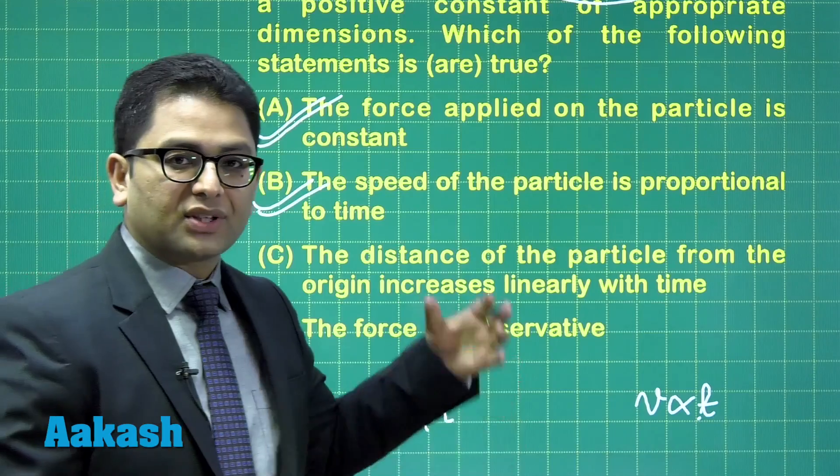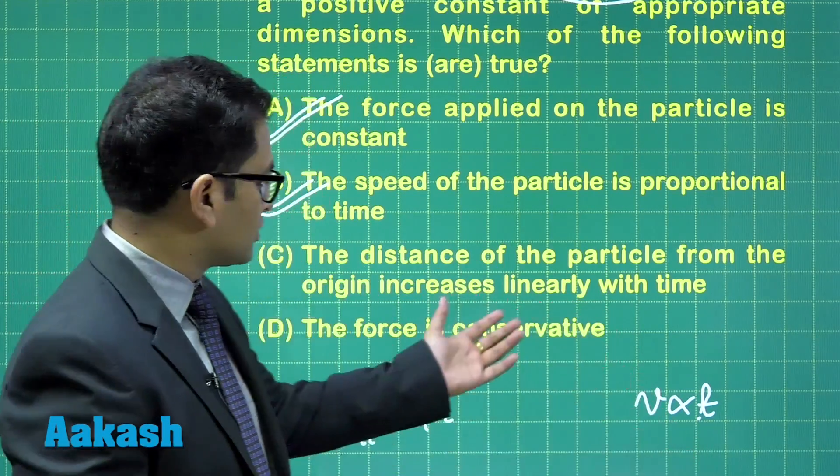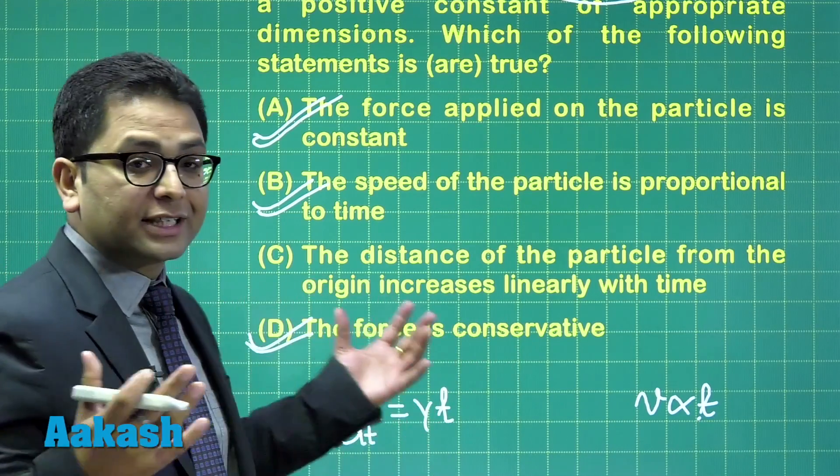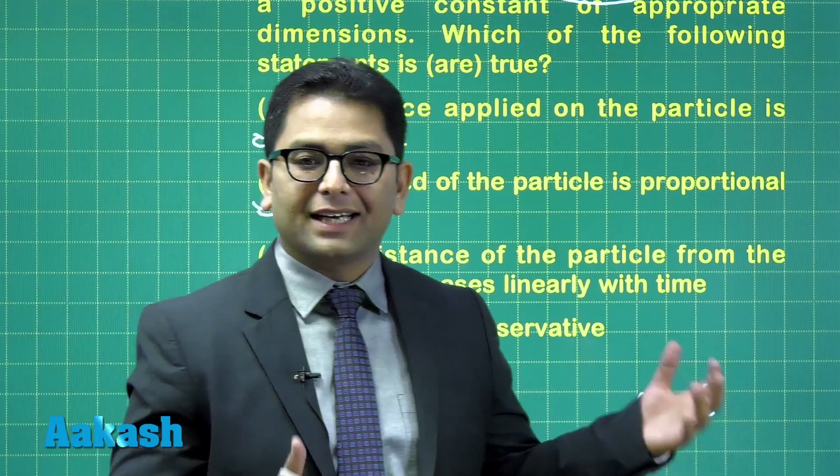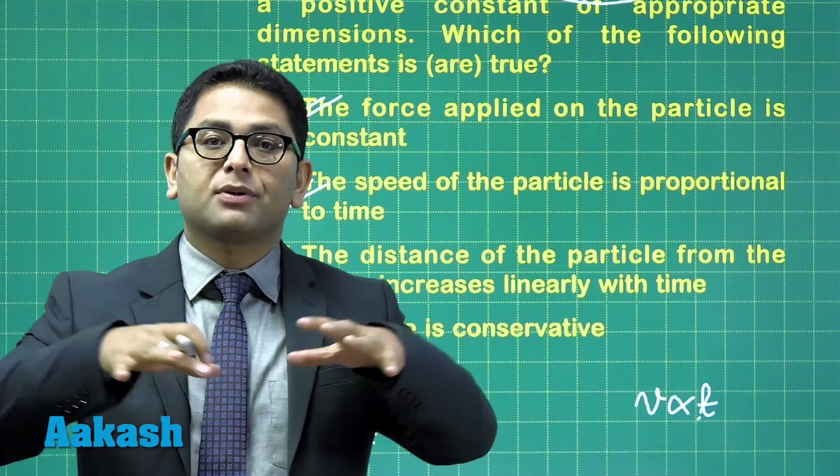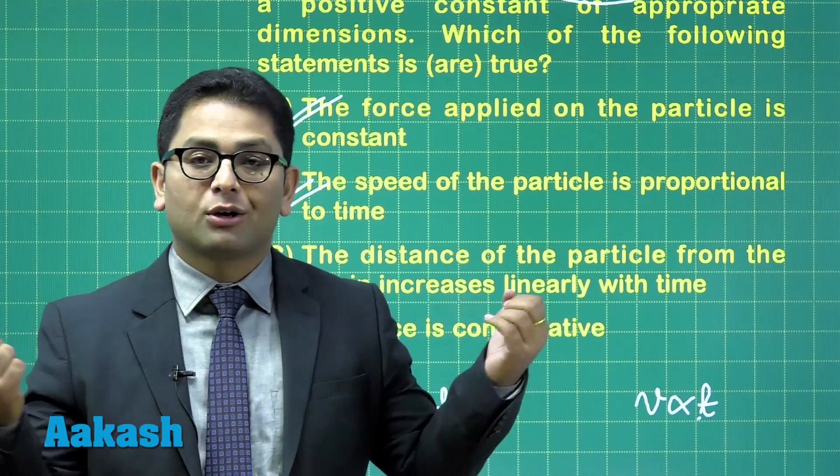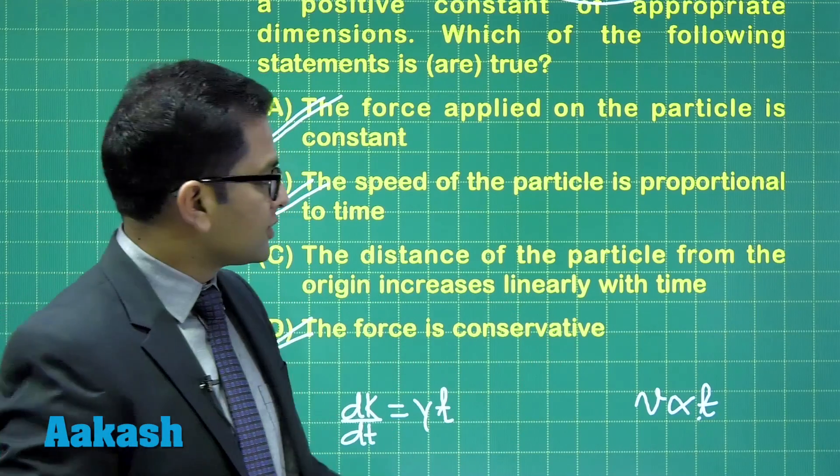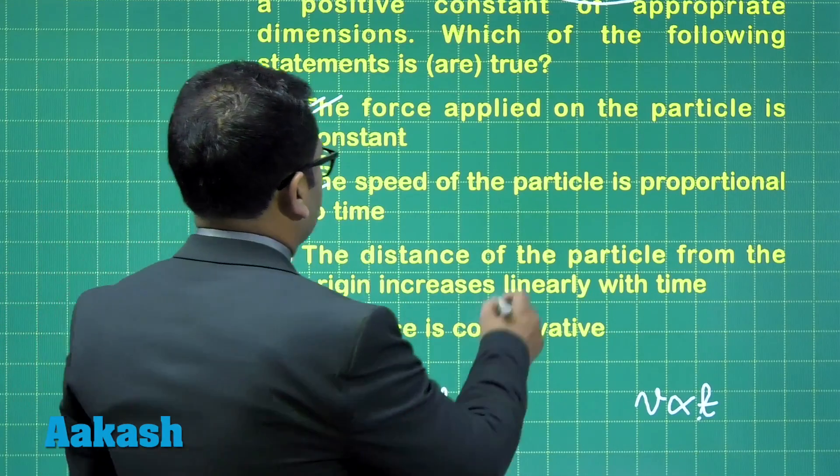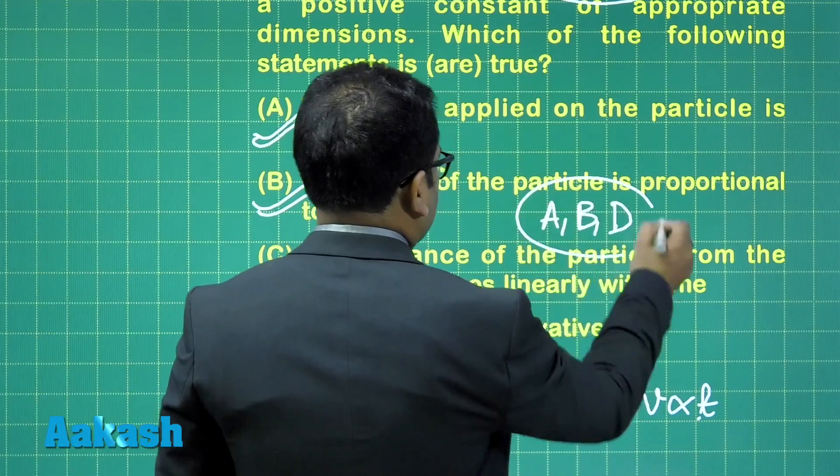Distance will vary linearly with time. That's wrong. Because if the acceleration is constant, distance will vary parabolically with time. So we'll not be choosing option C. And yes, option D is correct. The force is conservative. Because if a force is constant, it must be conservative. Well, if a force is conservative, there are multiple ways how a force can be conservative. But one of the possible ways is when the force is constant. So therefore, for question number one, the first question of paper two, option number A, option number B, and D are the correct option.